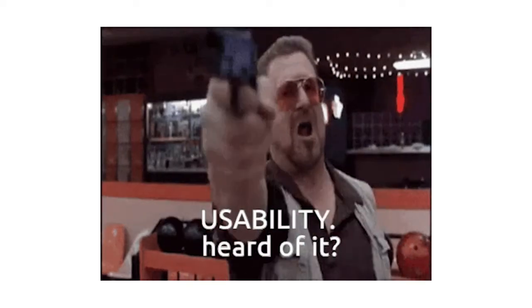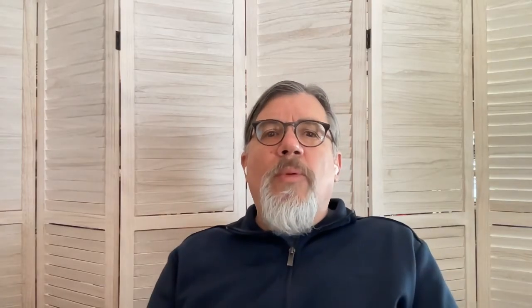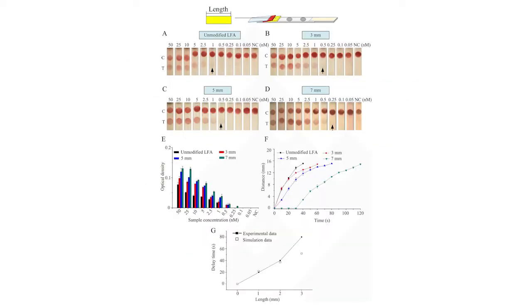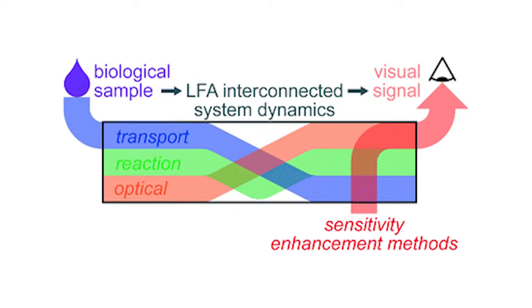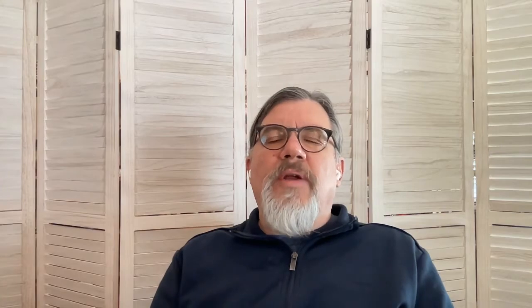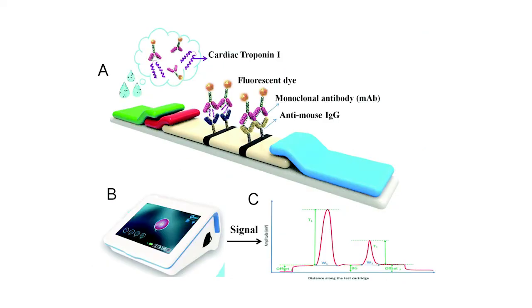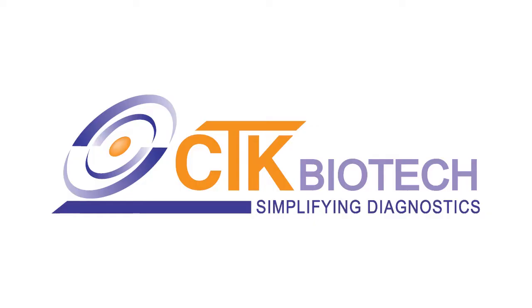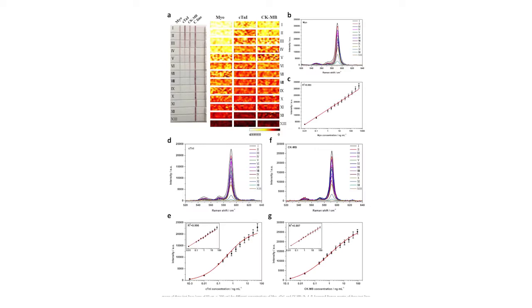The areas of innovation are two: one is trying to improve the performance of the tests, and the second is trying to improve the usability. To improve performance, typically people want to improve the sensitivity or lower limit of detection. They have tried to do that by increasing the signal of the test. The color of gold is only visible at a fairly high concentration, so people have moved to fluorescent dyes. But you can't see fluorescent dyes directly, so you need to use a reader, as opposed to the colorimetric version where you simply look at it and know whether it's reactive or not.